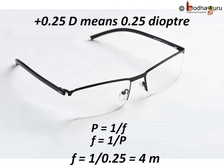Say the optician prescribed a lens with power plus 0.25 D. D means diopter, the SI unit of the power of lens. Plus 0.25 means focal length of the lens is positive, means it is a convex lens.